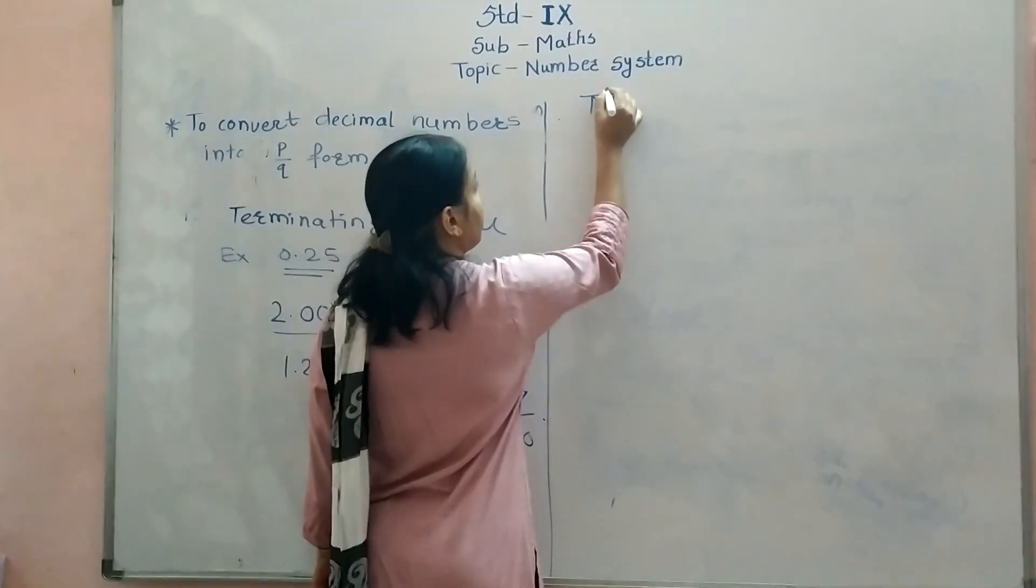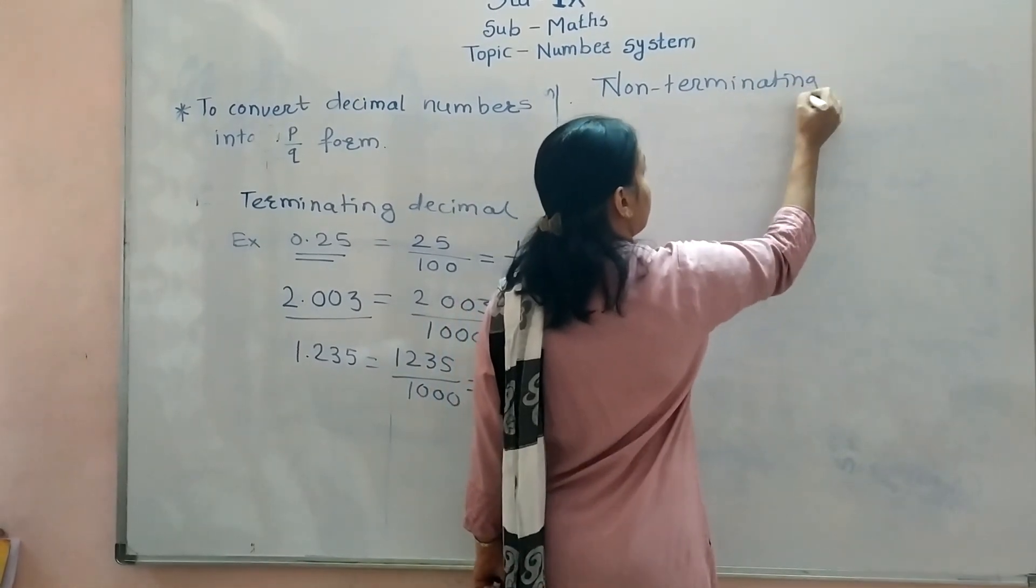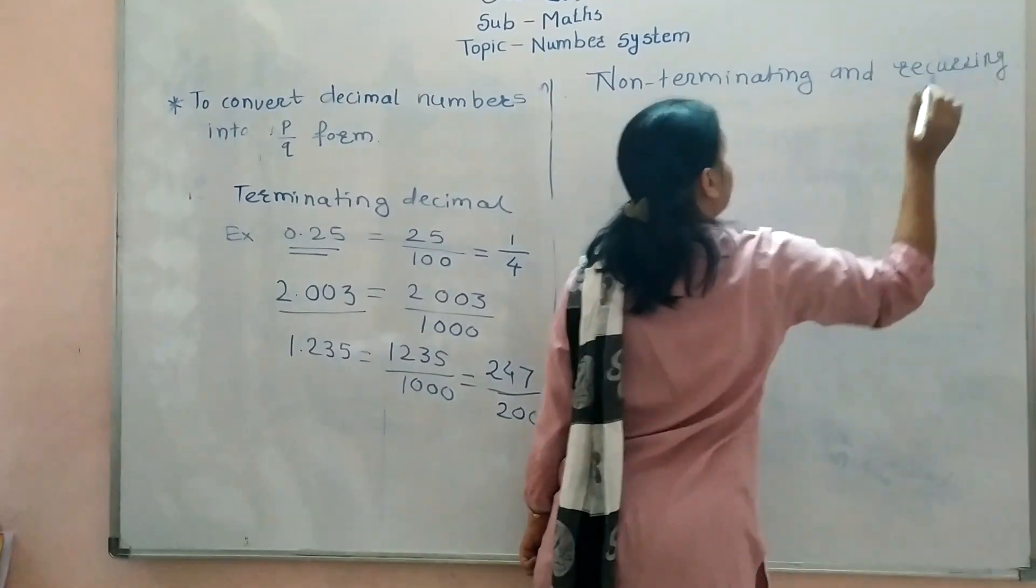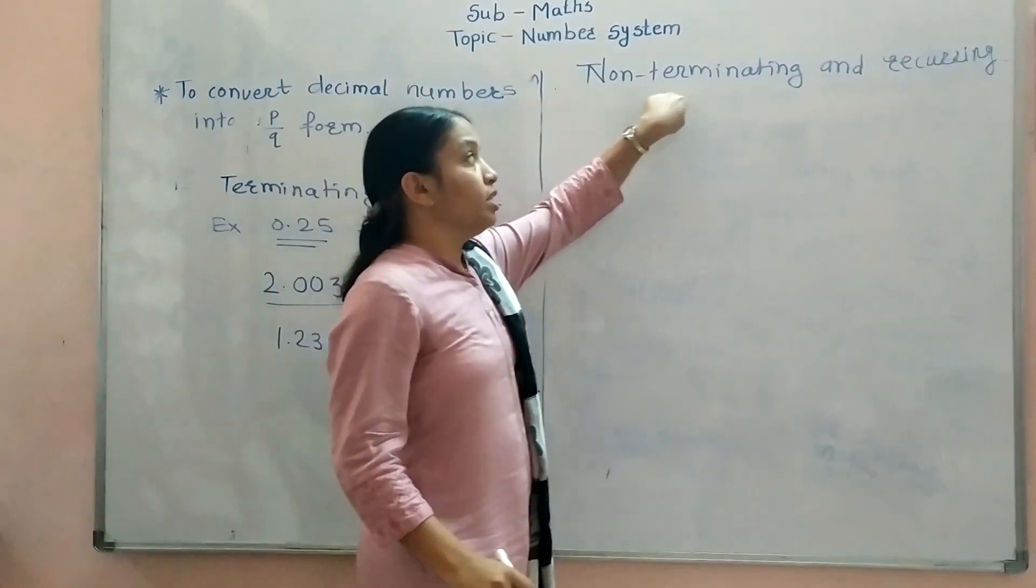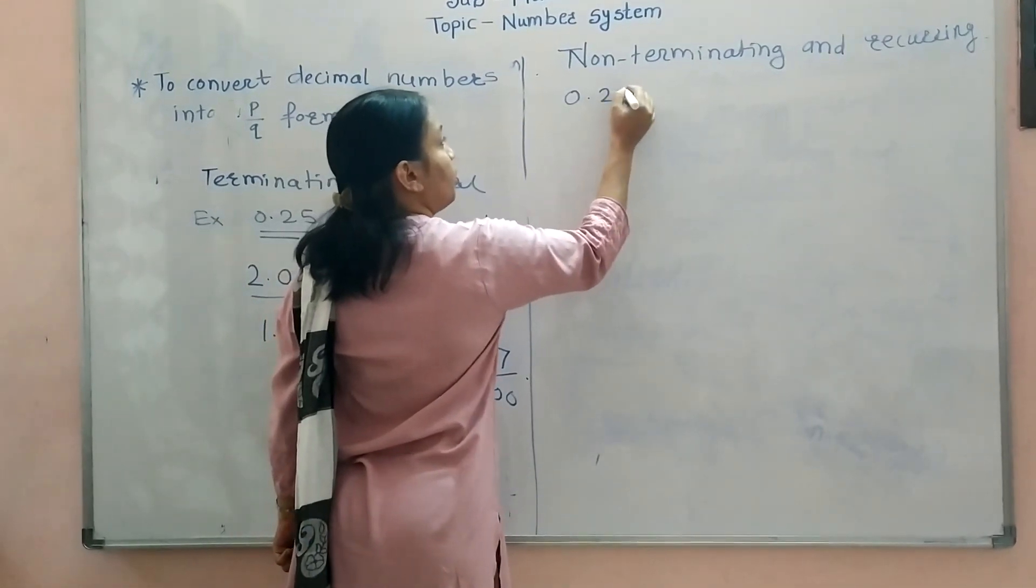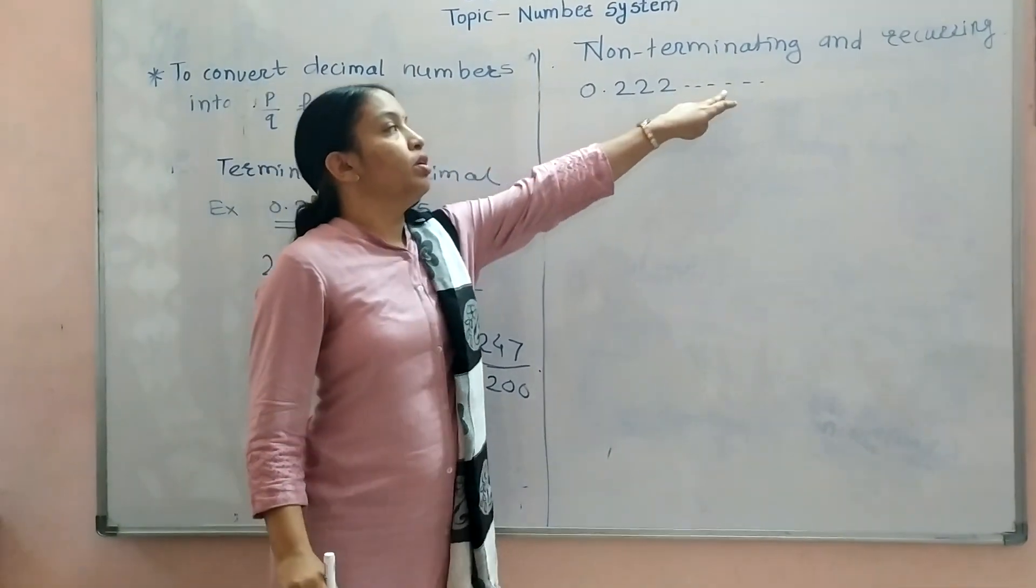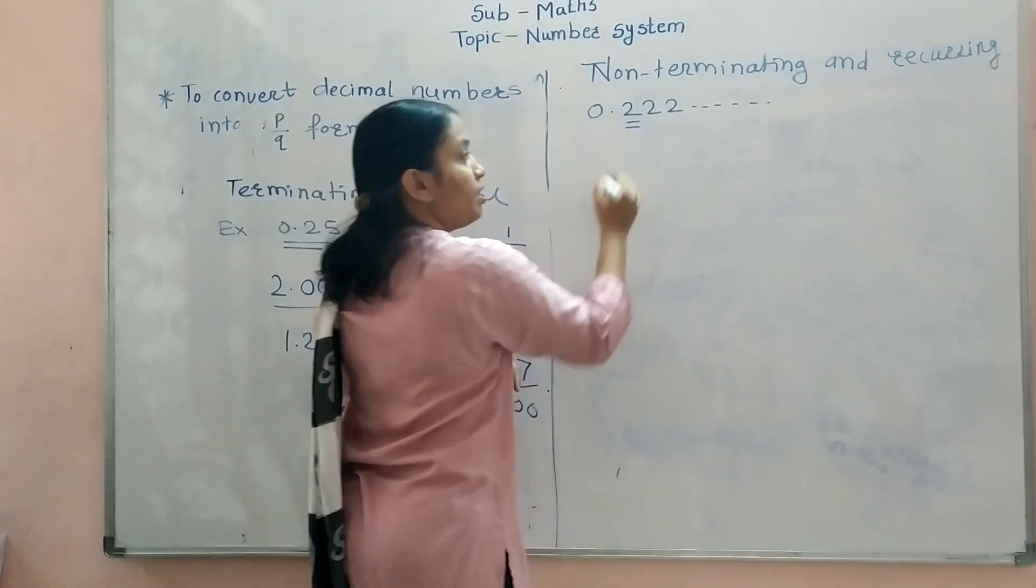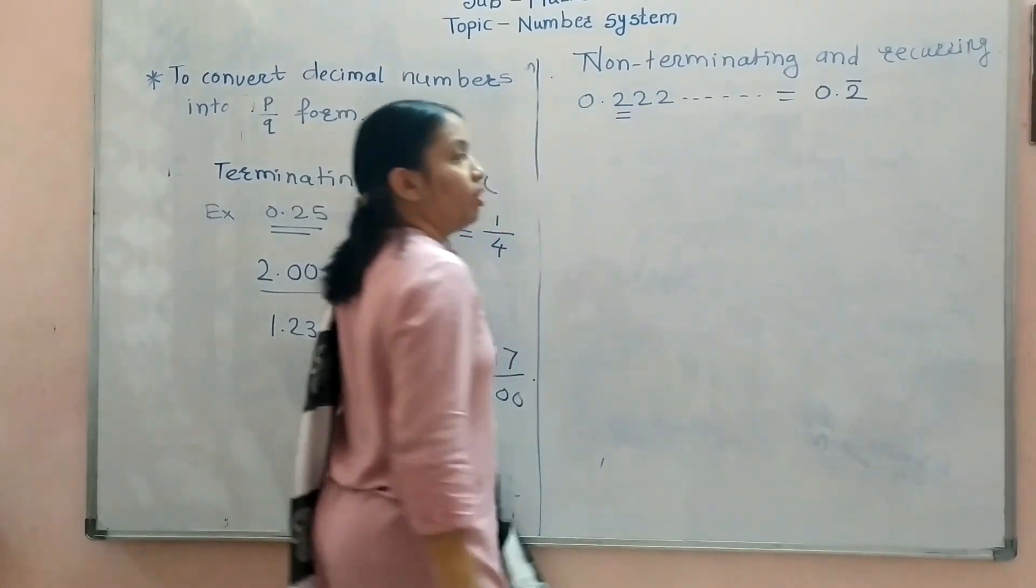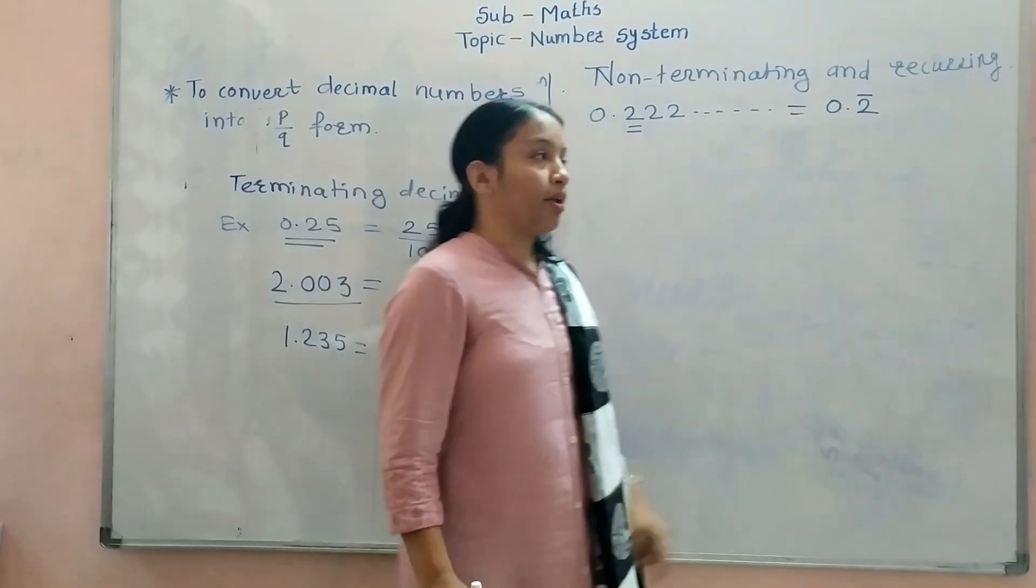Now, another type is non-terminating and recurring decimal. If the decimal expansion is non-terminating and recurring, for example, suppose 0.222... We have to convert this. This is the non-terminating but number 2 is recurring. Now, in short, it can be written as 0.2 bar. Which number is repeating, on that number you have to draw the bar.